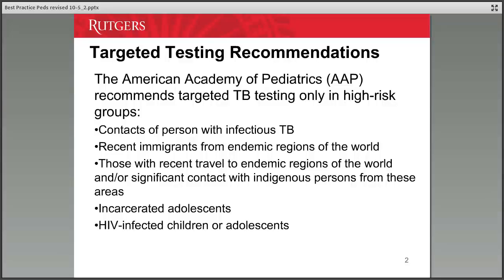The American Academy of Pediatrics recommends targeted TB testing only in high-risk groups. This includes contacts of persons with infectious TB, recent immigrants from endemic regions, those with recent travel to endemic regions or significant contact with indigenous persons from these areas, incarcerated adolescents, and HIV-infected children or adolescents. We only want to test children from high-risk situations, because a positive skin test in a child from a non-endemic area presents a real dilemma.